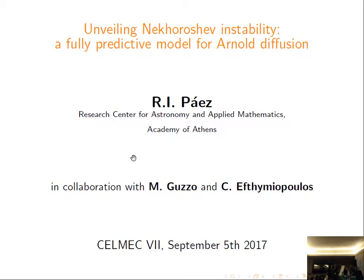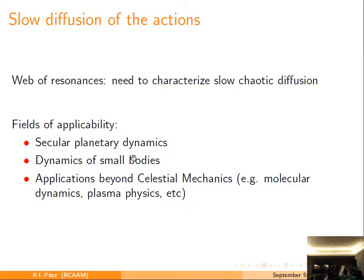This is work in collaboration with Massimiliano Guzzo and Christos Efthymiopoulos. After four years of working on classical celestial mechanics, my first talk is about weakly chaotic Hamiltonian systems. What I'm going to discuss today, since we cannot prove exactly it is Arnold diffusion, I will call it a slow diffusion of actions. The key point is, if you have a system that has a web of resonances, you will have some slow chaotic diffusion. In celestial mechanics, there are several different fields where this appears, in particular in planetary system dynamics.